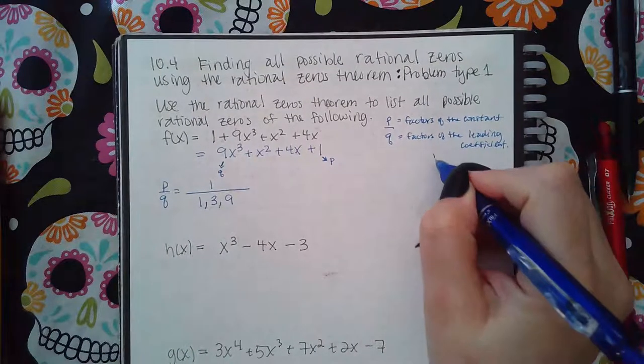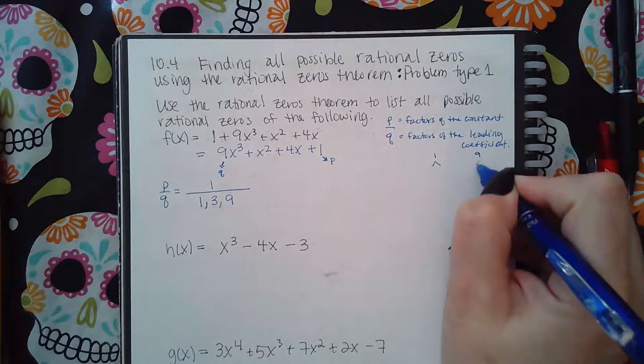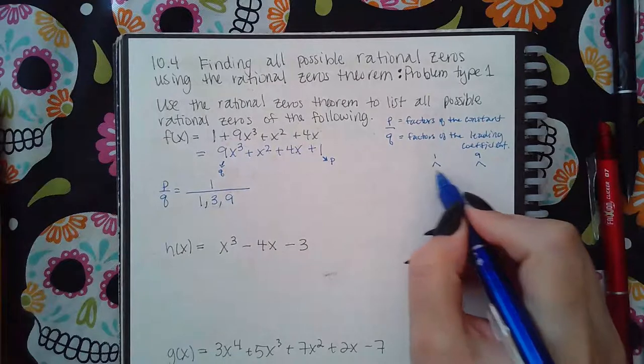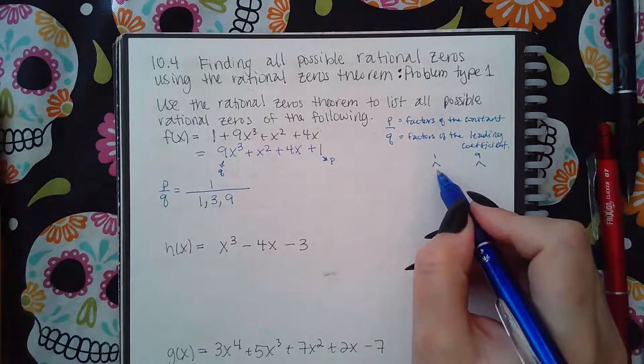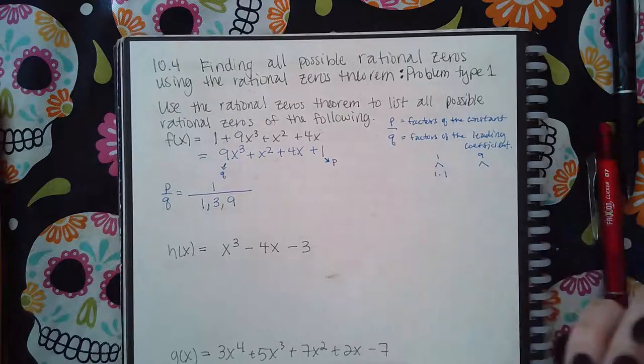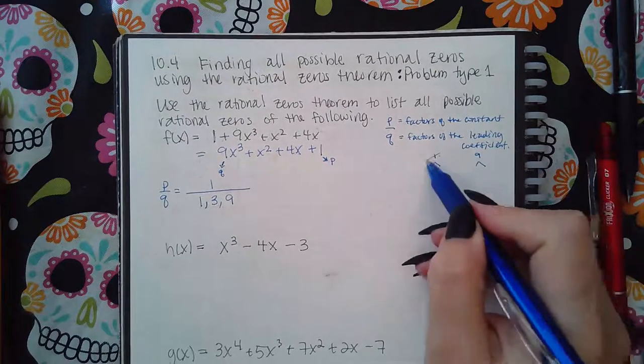So essentially what I'm doing is I'm making a tree for both 1 and 9, but there's nothing that multiplies to give me 1 other than 1 itself. 1 times 1 is the only thing that will give me 1. So this doesn't really help me.